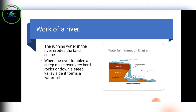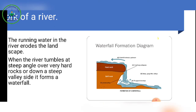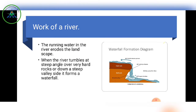A waterfall is formed when a river tumbles at a steep angle over very hard rock or down a steep valley. You can see a picture of a waterfall — it may also be in your textbook. Using the speed of the waterfall, hydroelectric electricity is generated.